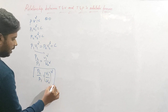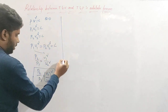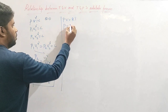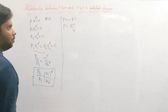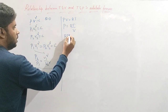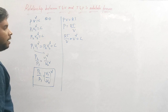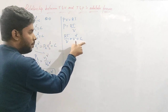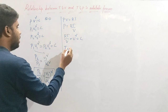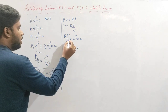Now, from the ideal gas equation PV = RT, I can write P = RT/V. Substituting this P into PV^γ = C, I get (RT/V) × V^γ = C. Since R is a constant, taking it to the side, I have T × V^γ in the numerator and V in the denominator, giving T × V^(γ−1) = constant.